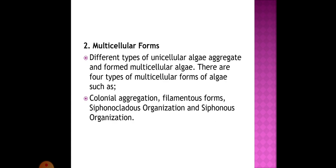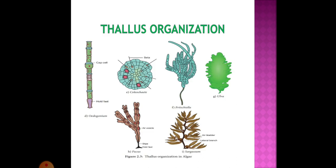Multicellular forms: Different types of unicellular algae aggregate to form multicellular algae. There are four types of multicellular forms: colonial aggregation, filamentous forms, siphonocladous organization, and siphonous organization. Examples of different thallus organizations observed in algae include Oedogonium, Coleochaete, Fritschiella, Ulva, Fucus, and Sargassum.